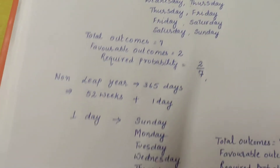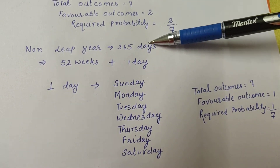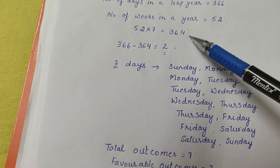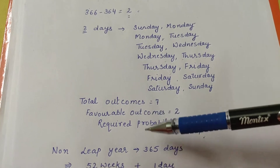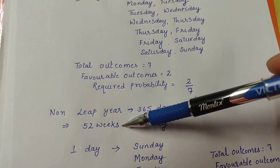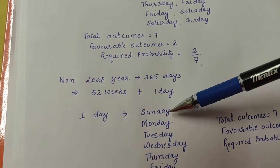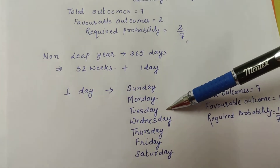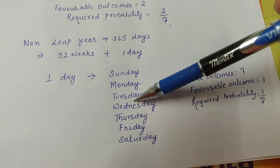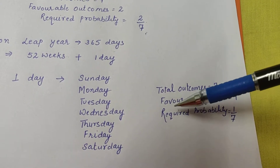Now in the case of a non-leap year, there are 365 days. When we consider 52 complete weeks, that gives us 364 days. So in a non-leap year there is only one extra day beyond the 52 complete weeks, and that one extra day can be either Sunday, Monday, Tuesday, Wednesday, Thursday, Friday, or Saturday.